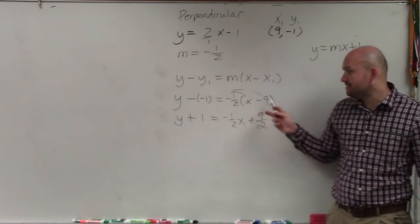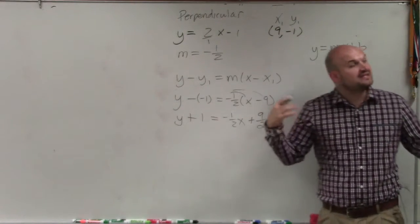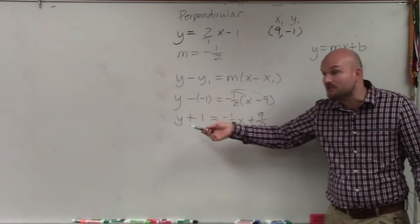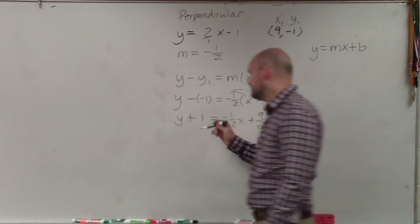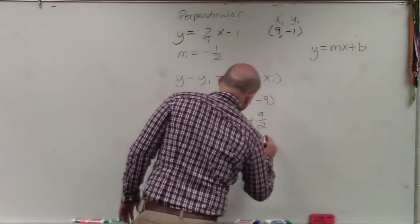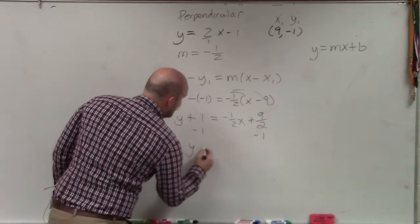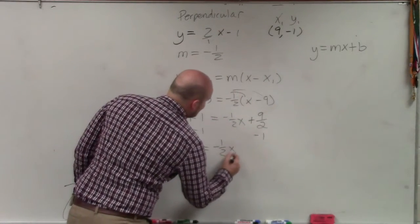Now, this is what it'd be in point-slope form. But if it says now to write it in slope-intercept form, all I have to do is subtract the 1 over there. So I'd subtract 1, subtract 1, and I have y equals negative 1 half x.